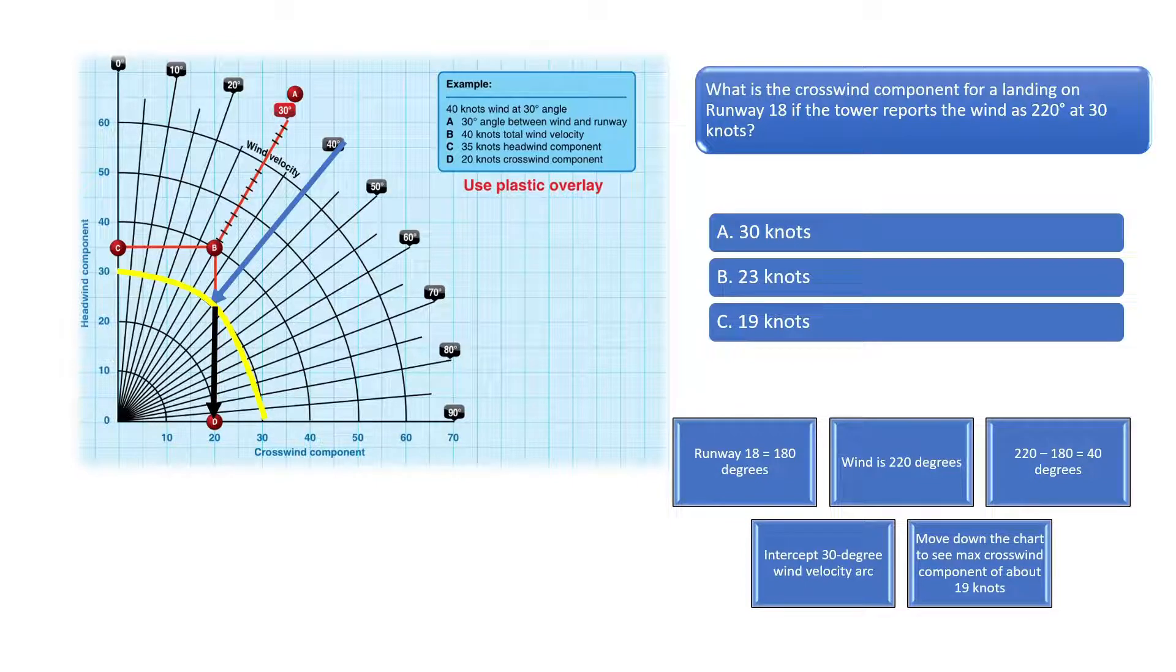Next move down to find the crosswind component of about 19 knots, see the black arrow, since it is just to the left of the 20-degree indicator on the bottom of the chart, denoting the crosswind. Therefore, there will be a 19-knot crosswind from the right when landing on runway 18 when the wind is blowing from 220 degrees at 30 knots.